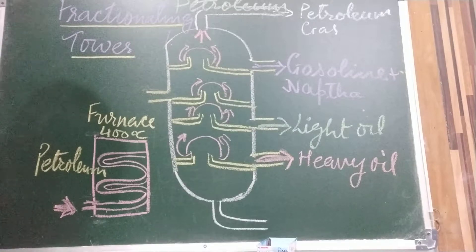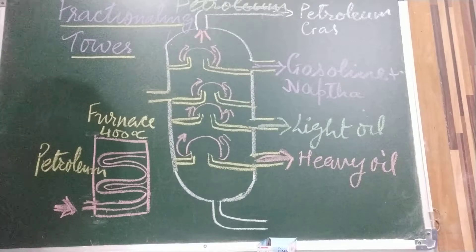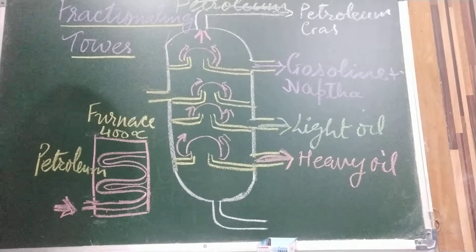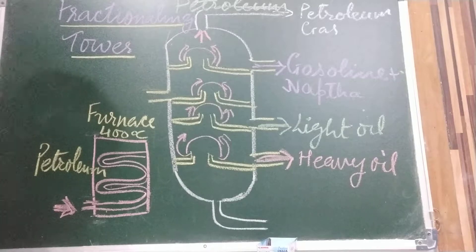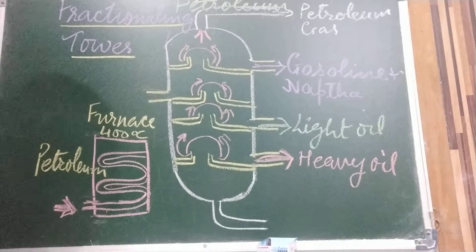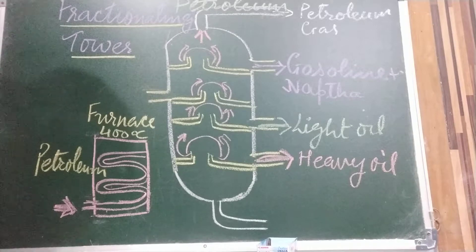The crude oil pumped out from a well is a black color liquid. So children, that is why we also call it black gold, because of its color and it is very expensive or we can say it is very useful. That is why we call it black gold.